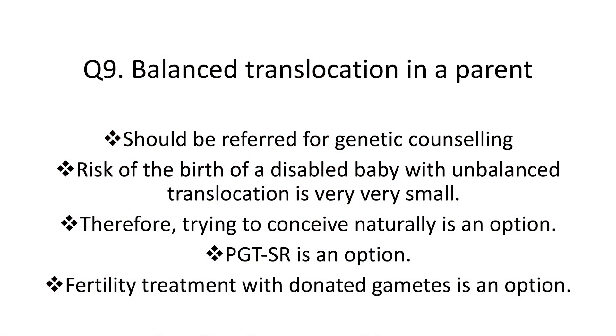Question 9: How should you manage if one of the parents has a balanced translocation? Genetic counselling is really important, and following counselling, they have the option to try again naturally. The risk people worry about is the birth of a baby with unbalanced translocation, but we now know that risk is minuscule, so trying to conceive naturally is certainly an option. The second option is pre-implantation genetic testing (PGT-SR), but this should not be routinely offered, as couples have a very good chance of conceiving naturally and this is a highly invasive procedure.